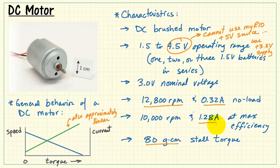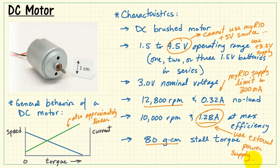Also in terms of the current demanded by the motor, even at the low value of 0.32 amps, this is already close to the limit of 300 milliamps for the MyRio.